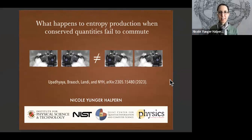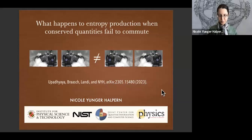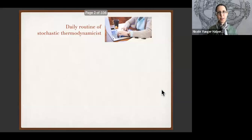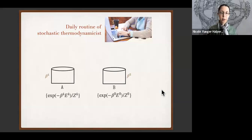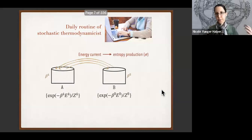I'd like to thank the organizers for the invitation to speak here. I'm delighted to be with you virtually. This work is based on a paper that actually came out on the archive today. What do we as stochastic thermodynamicists do on a daily basis? In many cases we think about two systems A and B that have inverse temperatures. If they're classical, they'll be prepared in canonical ensembles, and if they're coupled together, energy can flow between them, and as energy enters or leaves a system it produces entropy.